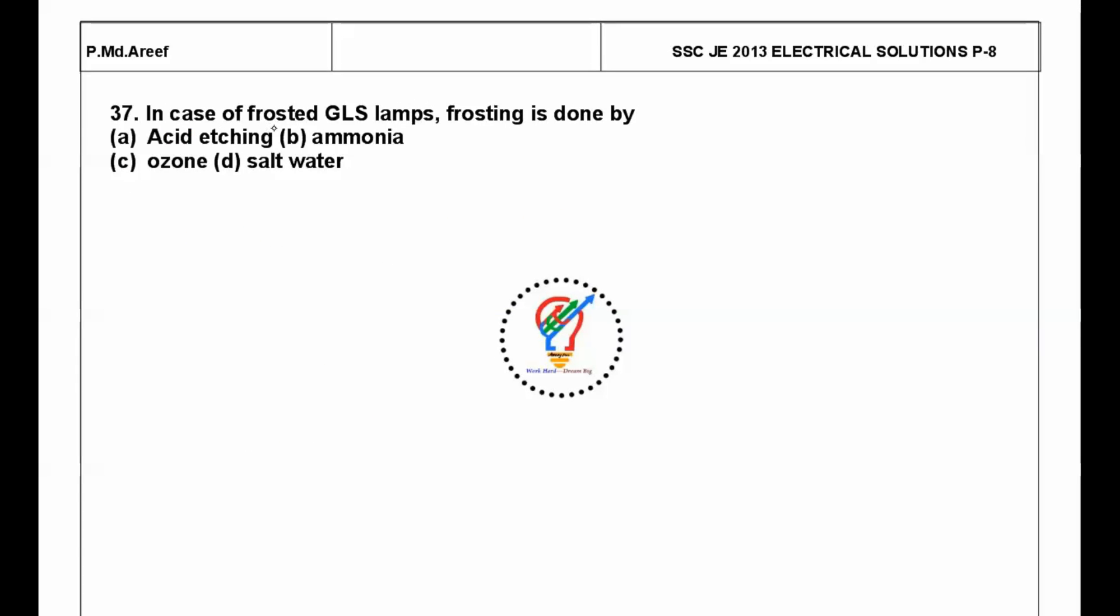Next question: in case of frosted GLS lamps, that is general light service lamps, frosting is done by acid etching. What is the meaning of acid etching here? When the lamps are there, the lamps are properly cleaned with the help of acid etching.